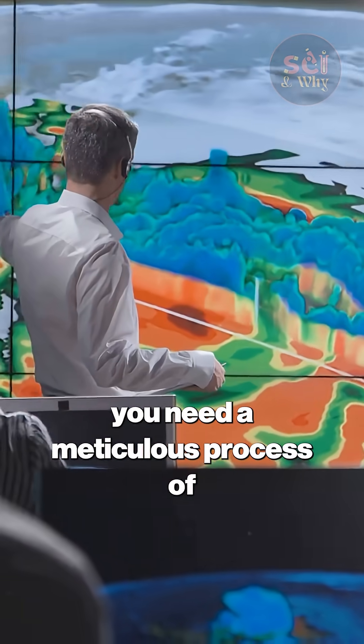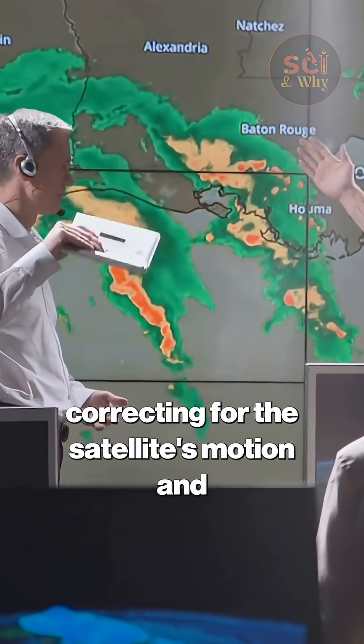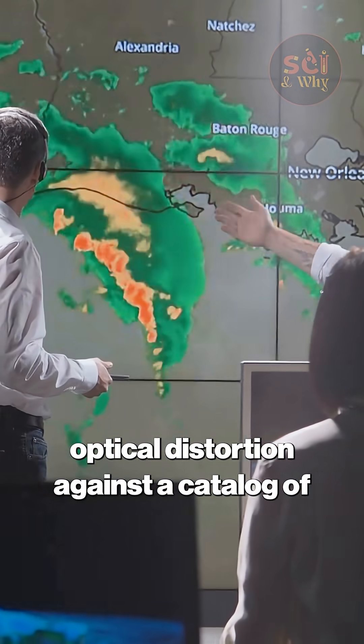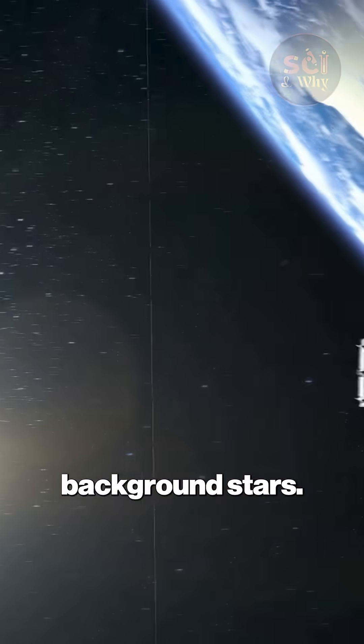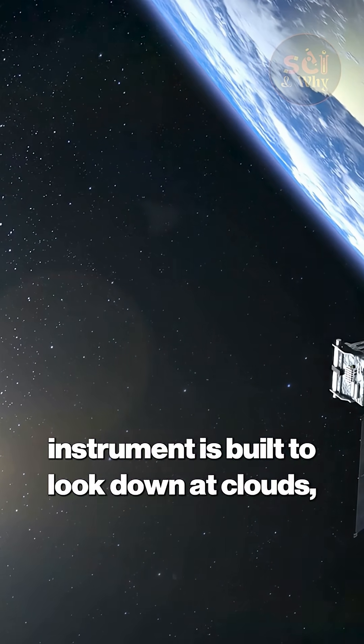To get a usable position, you need a meticulous process of astrometric calibration, correcting for the satellite's motion and optical distortion against a catalog of background stars. This is incredibly difficult when your instrument is built to look down at clouds.